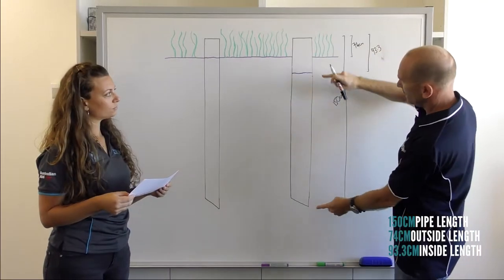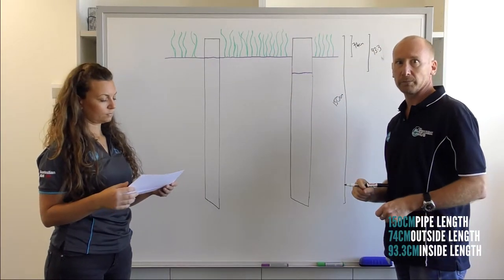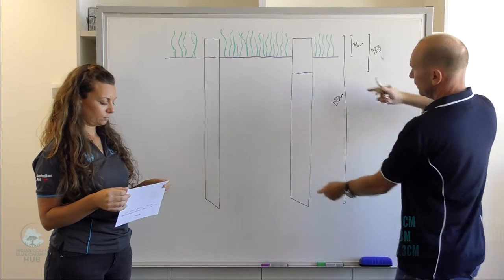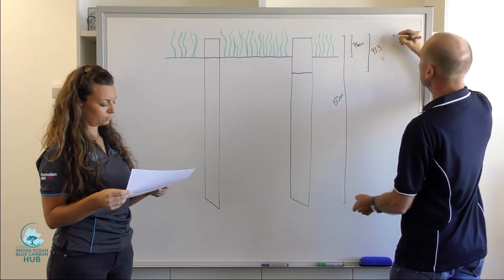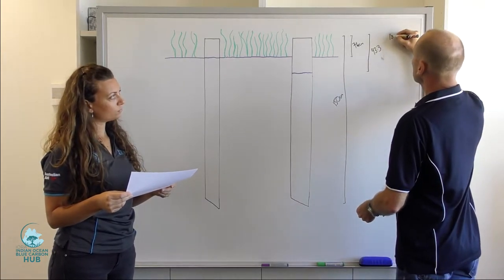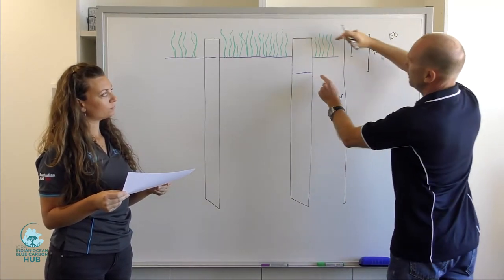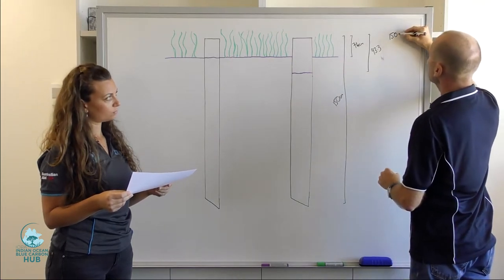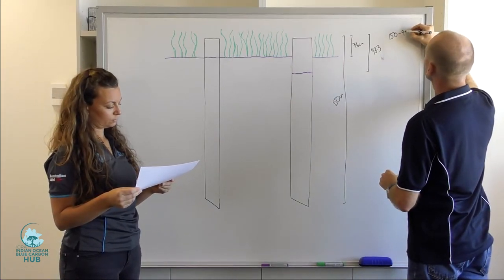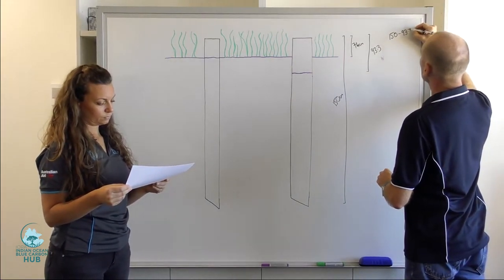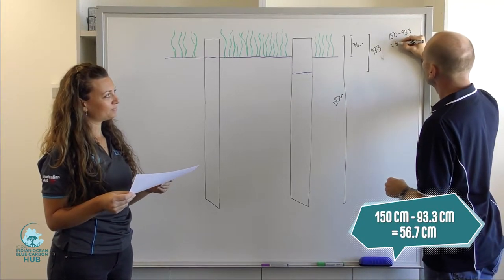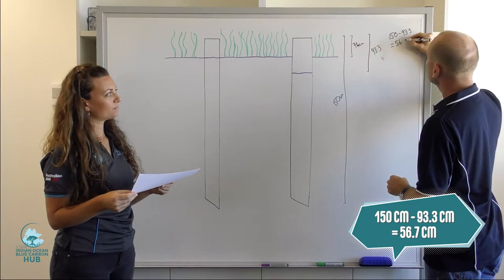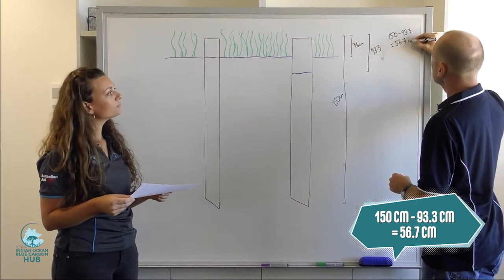So now we need to do a little bit of subtraction. To get the length of the retrieved core is the total length of the core minus the length of the core inside. I think I can do that in my head. 56.7 centimeters.